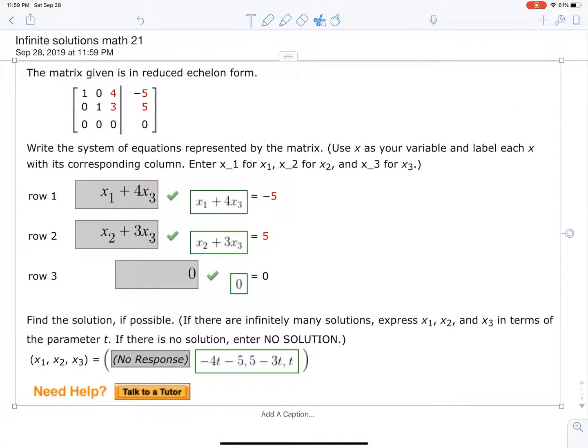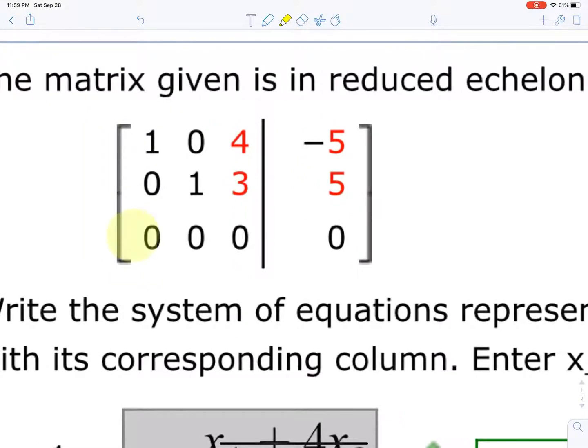Okay, here we have a system of equations. We have the matrix actually, and notice that the bottom row has all zeros. It's a three by three system of equations. In that case, we're gonna have infinite solutions.